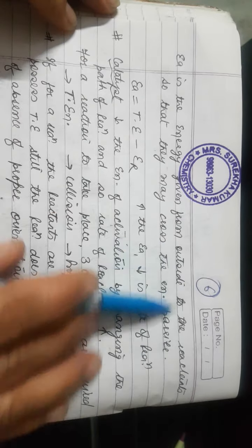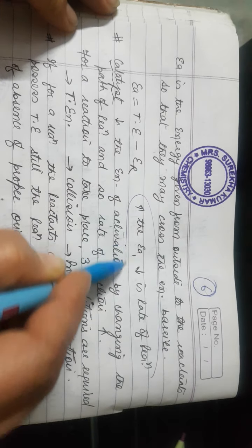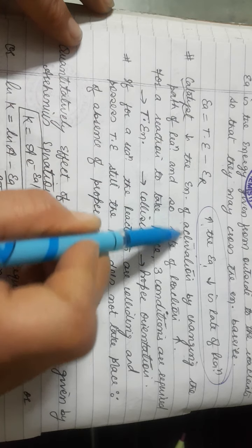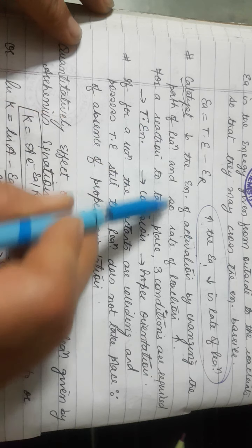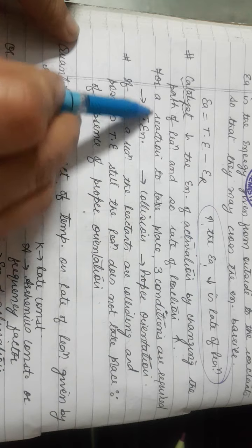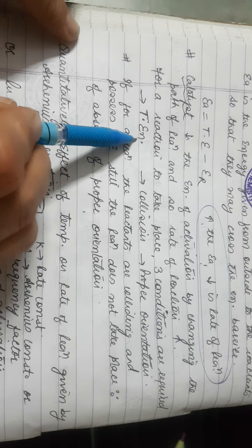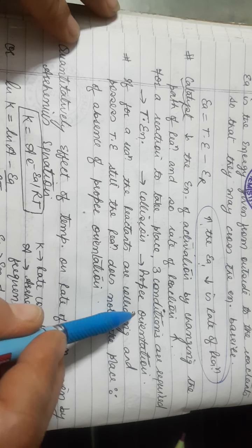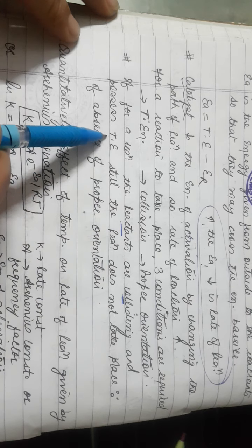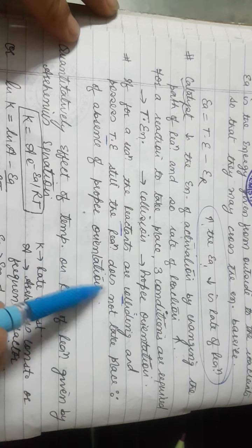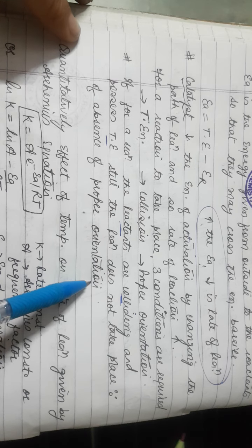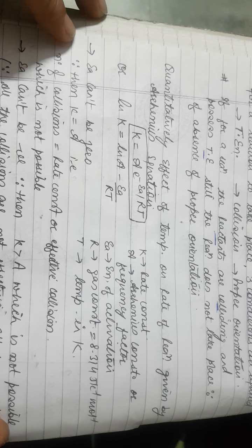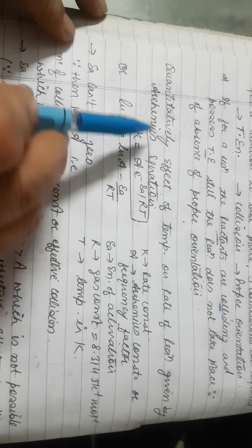A reaction with higher activation energy will have a lower rate of reaction. A catalyst decreases the activation energy and changes the reaction pathway, which is why it increases the speed of the reaction. For any reaction to occur, three conditions are needed: (1) molecules must have threshold energy, (2) they must collide, and (3) they must collide with proper orientation. If a reaction doesn't occur despite collisions and threshold energy, the orientation must be wrong.